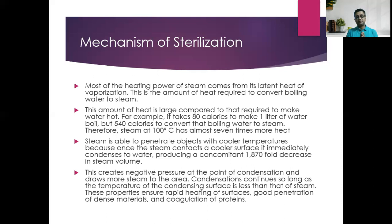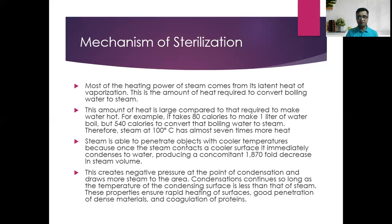Steam is able to penetrate objects with cooler temperatures. This creates negative pressure at the point of condensation and draws more steam to the area. Steam goes in, transfers the latent heat of vaporization, and condenses. That condensation allows more steam to come in, causing more condensation, more transfer of latent heat of vaporization, and more increase in temperature — until it reaches the sterilization temperature of 121°C.